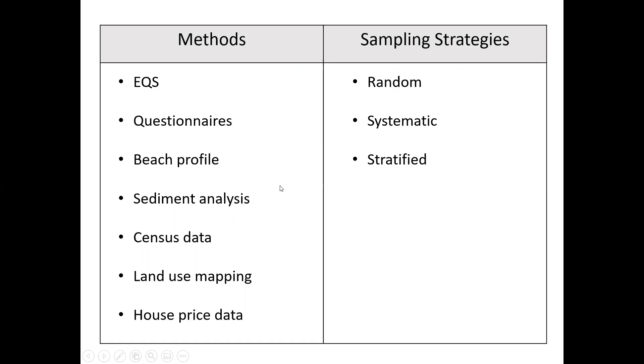Just remember there are two types of methods, primary and secondary. Questionnaire would be a primary method because you collect the data yourself. But census data would be a secondary method and that's because the data has been collected by somebody else on your behalf.